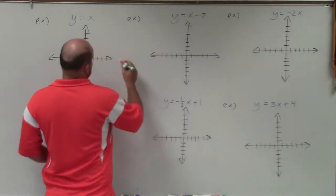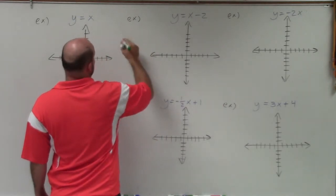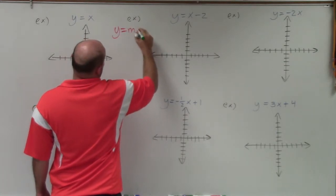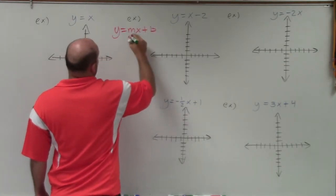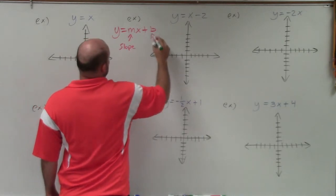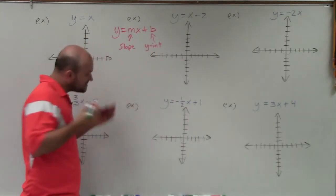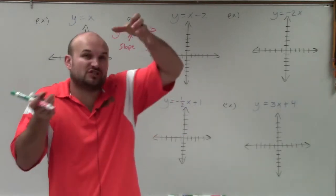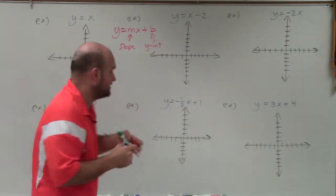Slope-intercept form is in the form of y equals mx plus b, where m represents the slope, and b represents the y-intercept. Now, the slope is a ratio — it's the ratio of the change in the y-coordinates over the change in the x-coordinates.